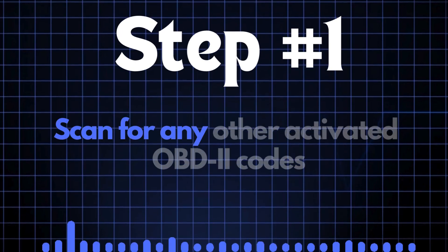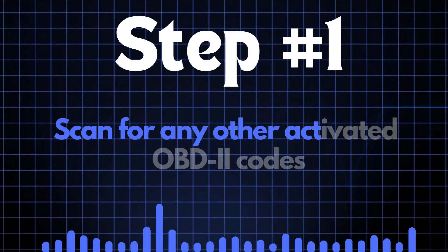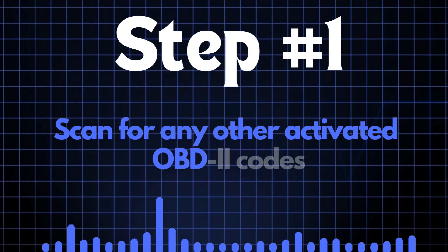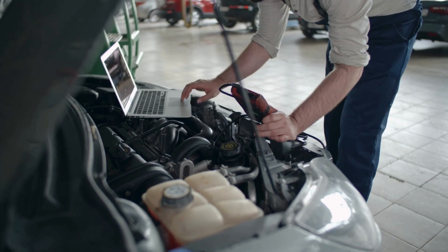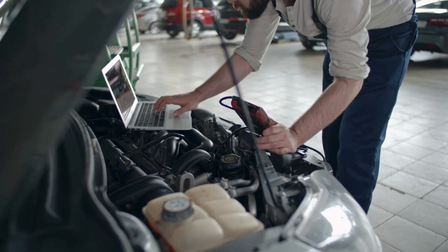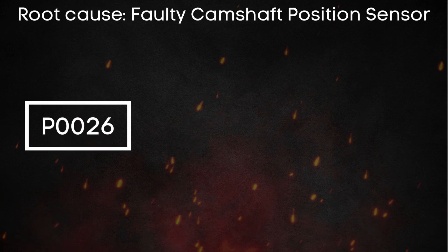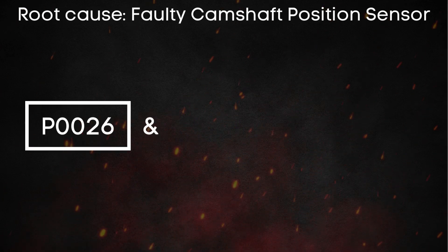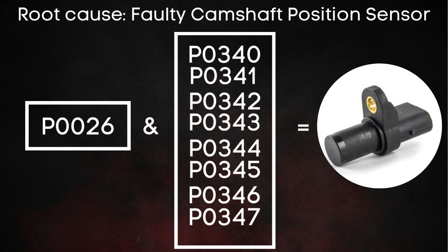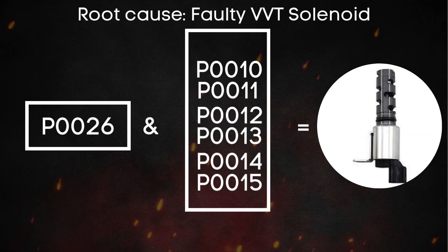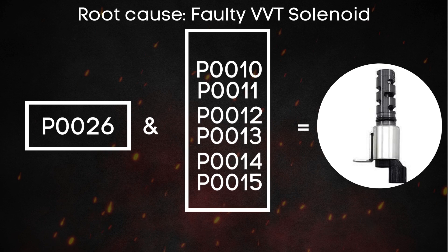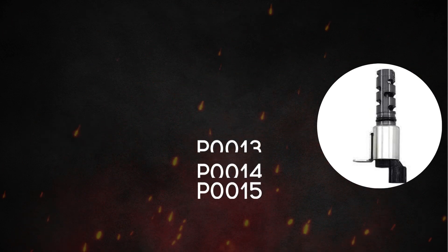The first step is to scan for any other activated OBD-2 codes. This helps us pinpoint where we need to focus. If there are other codes related to a faulty camshaft sensor, we should focus on the camshaft sensor. Similarly, if there are codes related to the VVT solenoid, that's where our attention should go.